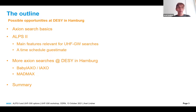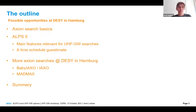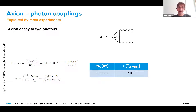I'll talk about the opportunities at DESY in Hamburg for axion searches. First some basics, then I'd like to describe what we are presently constructing for ALPS 2, and then also mention future axion searches at DESY — namely Baby IAXO, IAXO, and MADMAX.